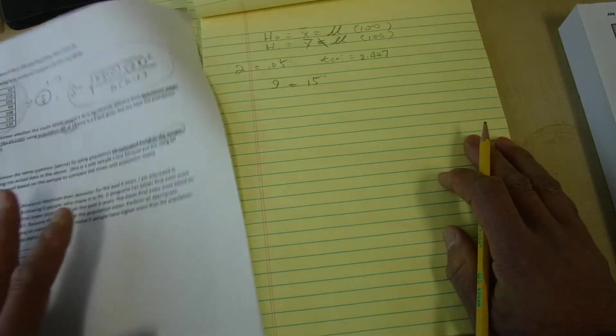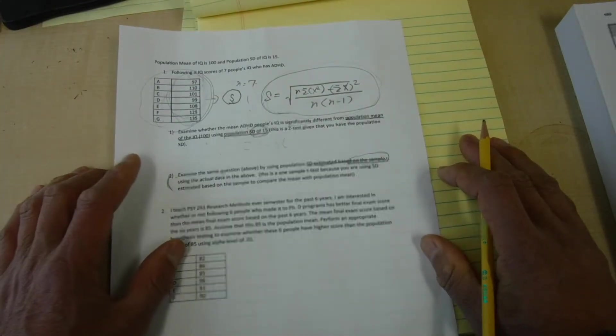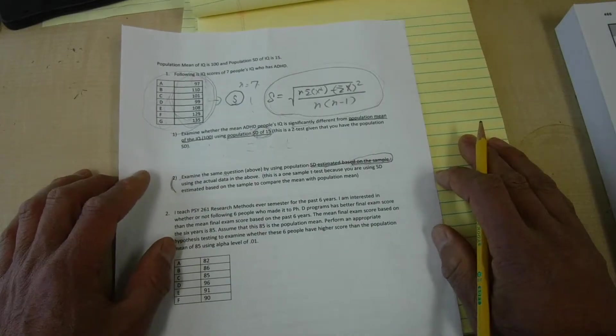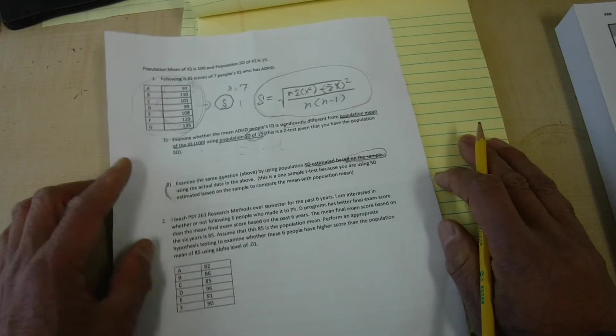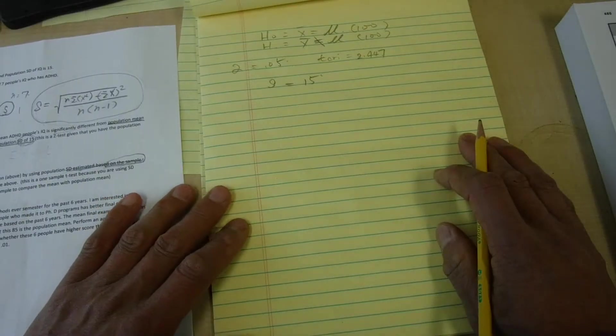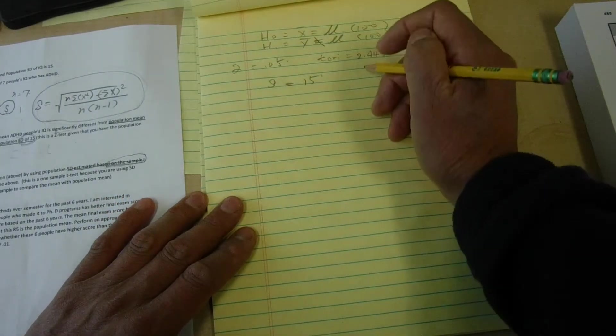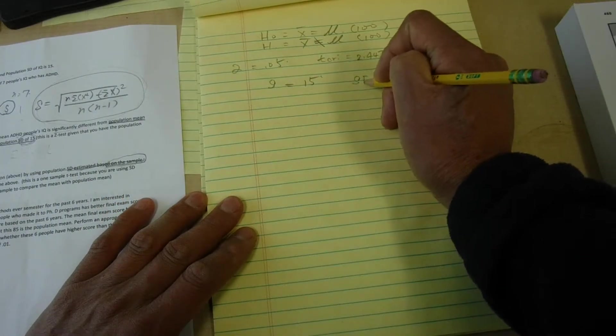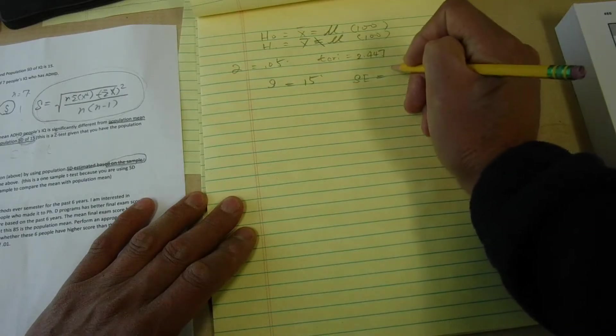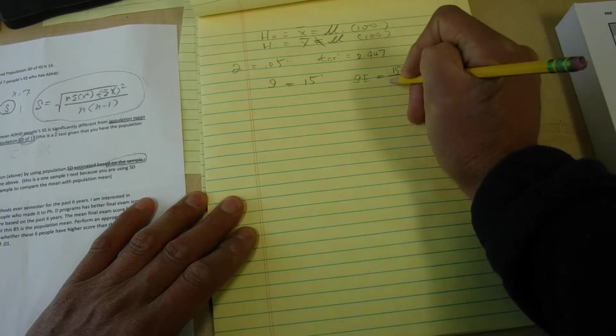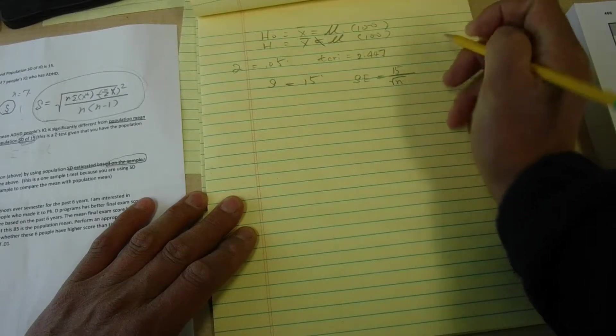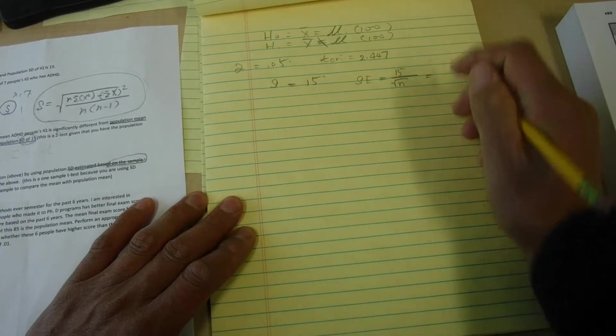I'm not going to do it myself this time, because we've been doing this several times. And by now, I assume that you're able to do this. So now you know s equals 15, then you should be able to compute standard error, which is 15 divided by square root of n. Right? So that is...